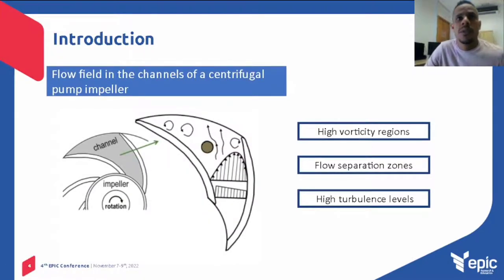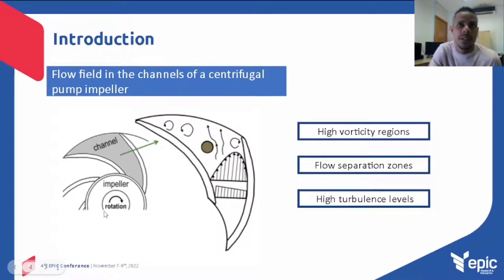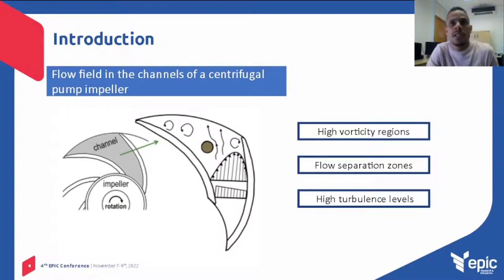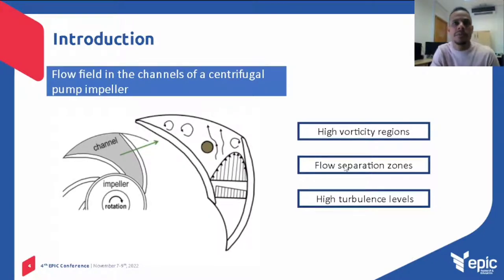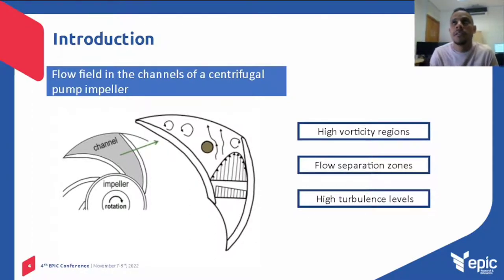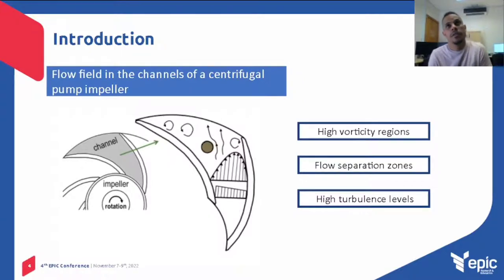Introduction. The flow field in the channels of a centrifugal pump contains eddying motions of a wide range of time and length scales, making the structures of this flow type exhibit high-vorticity regions, flow-separation zones, and high-turbulence levels. Thus, it is important to understand the physics of turbulent flows in this device, because many phenomena such as pump efficiency losses are associated with turbulence.